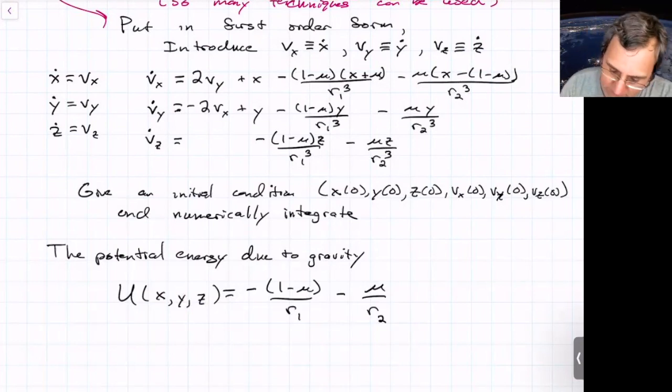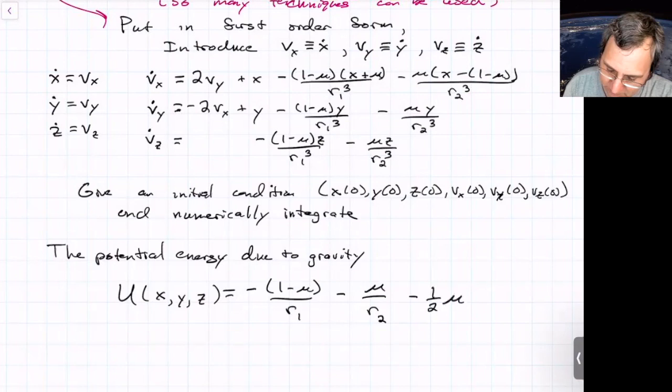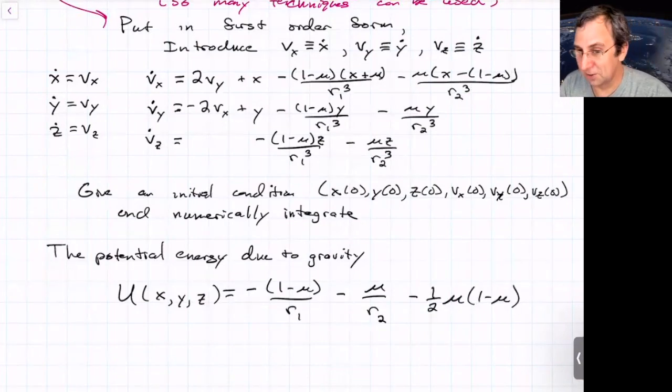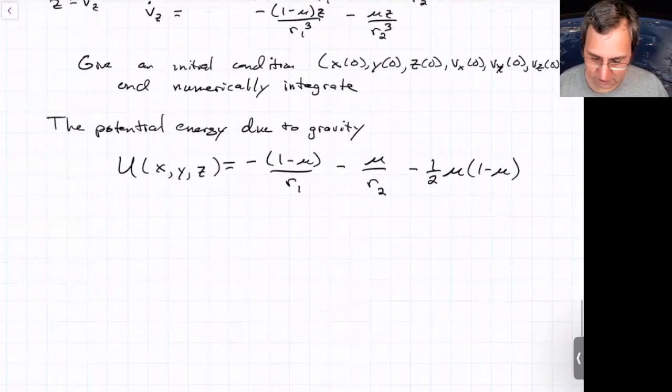There's another term that sometimes gets put on just for a convention. It doesn't add anything. It's just a constant term, right? For a potential energy, you could change where the datum is. You could change where the zero is. For reasons that we'll probably have to get to next time, this is the common thing that's added on. It's minus one half mu, one minus mu. It makes it so that the two triangular equilibrium points, L4 and L5, have a Jacobi constant of exactly three or a non-dimensional energy of exactly negative one and a half. So that's just put in as a convention. So that's the potential energy due to gravity.